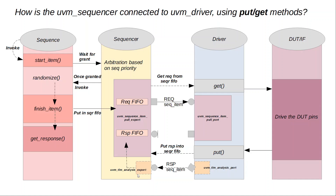The response FIFO gets populated. As discussed earlier, get_response is a blocking call and was waiting on the response back from the sequencer. Once the sequence receives it, get_response unblocks and that completes the transaction. So that's about it — let me know if you have any other questions or comments, or if you have a particular question you'd like me to create a video on, I'd be happy to do so. Thank you so much, take care.